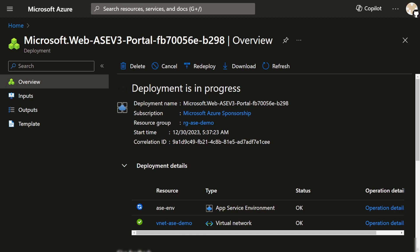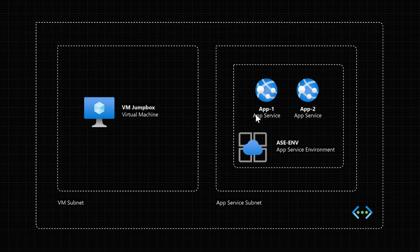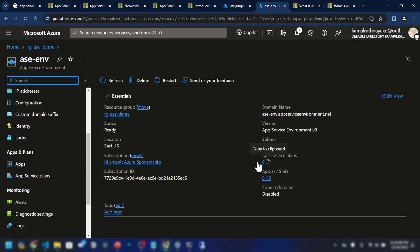This deployment can take hours to complete, so let's look at the architecture of our demo. We're going to deploy App Services into this App Service environment — first by creating an App Service plan. Then I'll be deploying a virtual machine in a different subnet and show you how you can access these apps from that virtual machine. These apps are not public; they're only accessible within the perimeter of the virtual network. The App Service environment is now deployed and has status ready, but we don't have any App Service plans or apps yet.